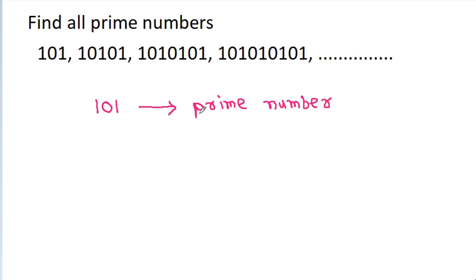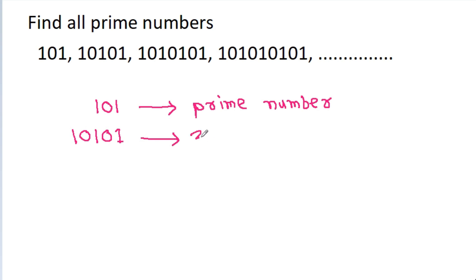The next number is 10101. Here the sum of digits is 3, so we can say that 3 is a factor.